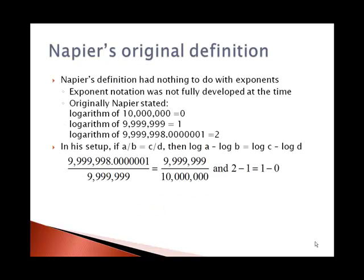Napier's original definition had nothing to do with exponents, primarily because exponent notation was not fully developed at the time. Originally, Napier stated that the logarithm of 10 million was 0, the logarithm of 9,999,999 was 1, and the logarithm of 9,999,998.000001 was equal to 2.